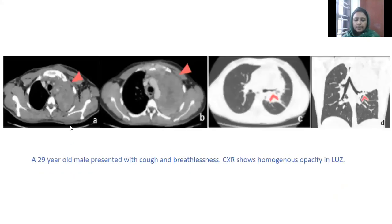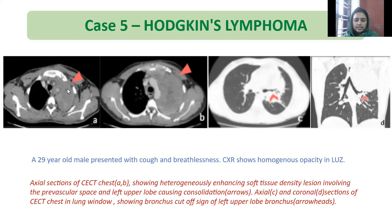A 29-year-old male presented with cough and breathlessness. Chest X-ray showed homogeneous opacity in the left upper zone. Axial CT chest images showing heterogeneously enhancing soft tissue density lesion involving the pre-vascular space as well as the left upper lobe, causing consolidation. Axial and coronal sections of CT chest in lung window showing bronchus cut-off sign in the left upper lobe bronchus. Biopsy revealed Hodgkin's lymphoma.